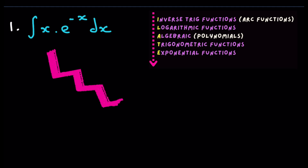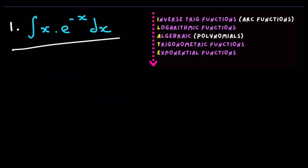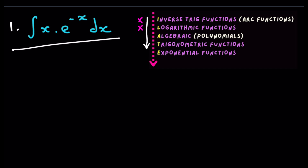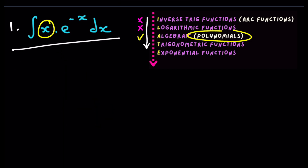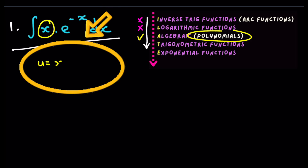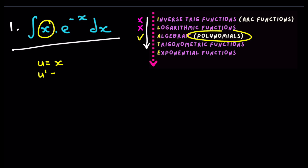Question one: we have to integrate x times e to the minus x. We work down the ILATE acronym calling the first thing we see u. Do we see an inverse trig function? No. A logarithmic function? No. Do we see an algebraic expression like a polynomial? Yes — this x is just x to the one. So we call that u, and u prime is equal to one.